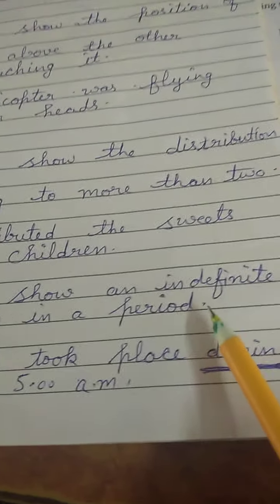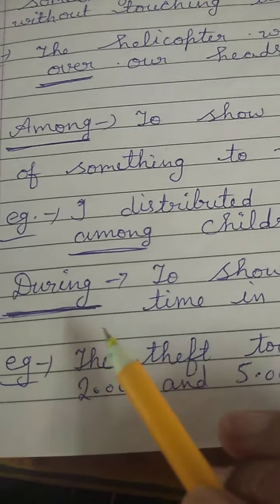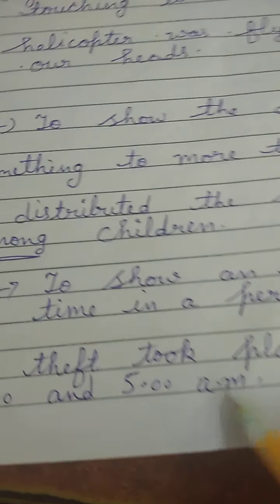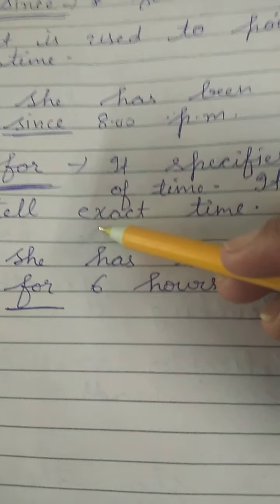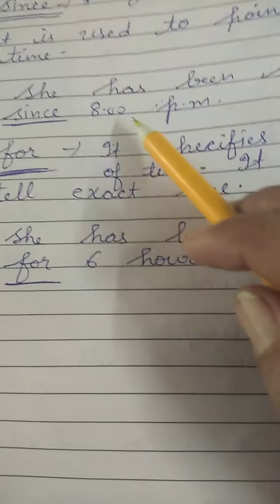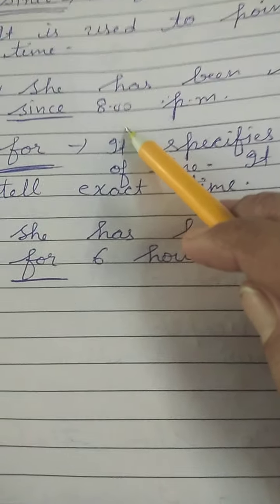Next is 'during' — to show an indefinite time in a period. If we don't know the exact time, we use 'during'. For example: the theft took place during 2 and 5 a.m. — we know it happened in that period but not the exact time. But 'since' is used for a specific point of time. Since is used for a perfect time. For example: she has been studying since 8 a.m. — we are pointing out the exact time, so we use 'since'.